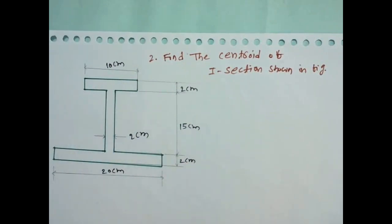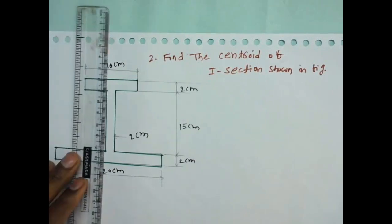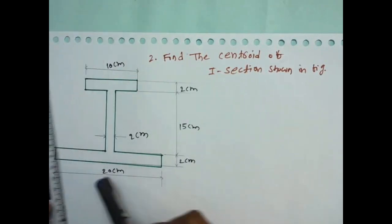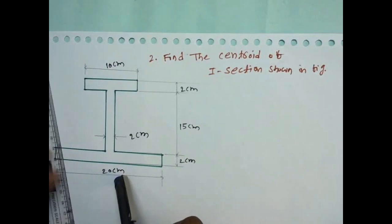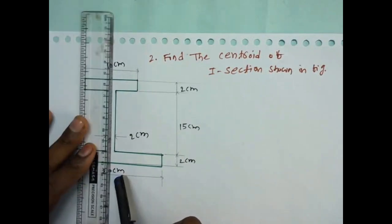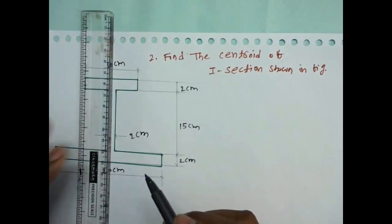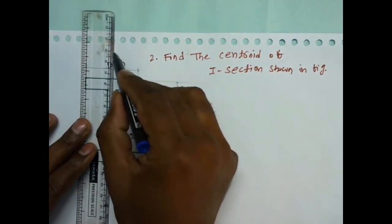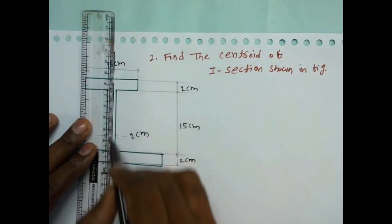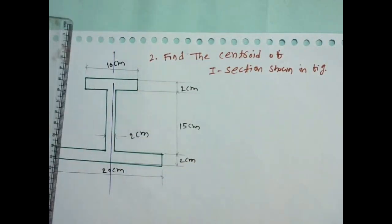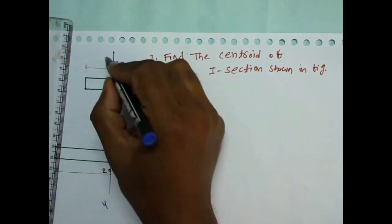For this section we have to find the centroid. First we have to check if the given section is symmetrical about any axis. I am drawing a midpoint line — the length of this is 20. The left and right are the same, so this is symmetrical about the Y-axis. This is the central Y-axis.